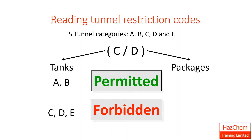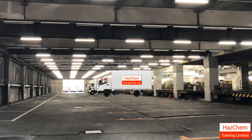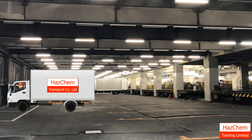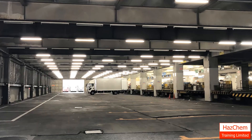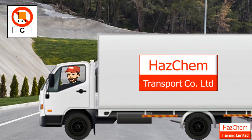The second letter applies to packages, so this is the letter that applies to Dave. He is permitted to use what comes alphabetically before D, or to the left of D — A, B and C. Good news for Dave: he can use a Category C tunnel. He is forbidden from using Category D and E tunnels. Dave finishes reading all his other documents and gets ready to drive away. He arrives at the Category C tunnel and, with the load he currently has on board, he is allowed to drive on through.